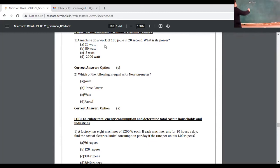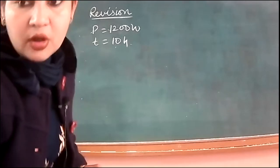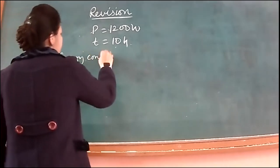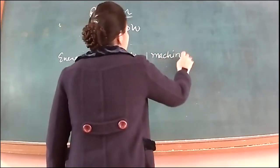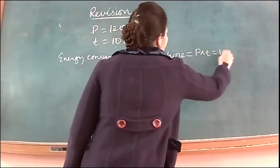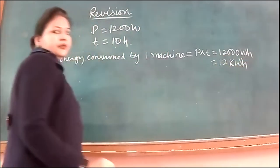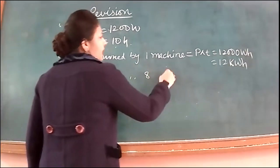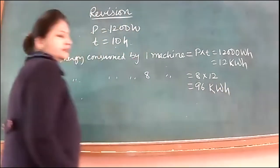So power of each machine is 1200 watt. Time is 10 hours. And cost is 4 rupees per unit. So energy consumed by one machine in one day. First of all, how much energy is consumed by one machine power into time 1200 into 10, 12,000 watt hour or we can write 12 kilowatt hour. So first of all, we have found energy consumed by one machine. So what is the energy consumed by eight such machines? Eight into 12, 96 kilowatt hour. Right?